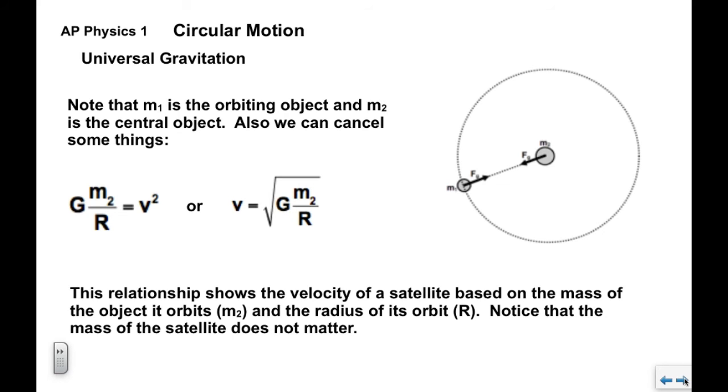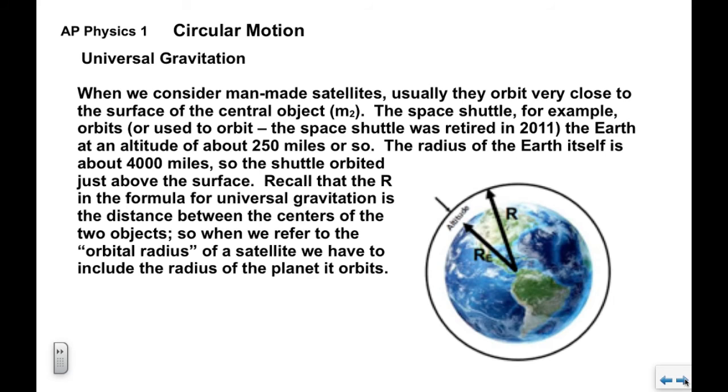This tells us the velocity of any satellite, whether it's natural or man-made, based on the mass of the object it orbits, which is the M2, and the radius of the orbit. Notice that the mass of the satellite actually drops out; the mass doesn't actually matter.